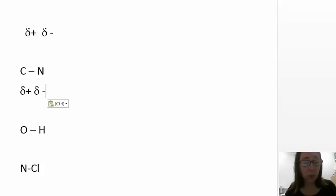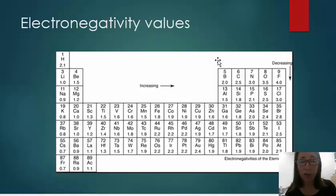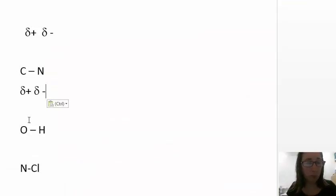Now, the difference between 2.5 and 3 is greater than 0.4, so this is a polar bond. And polar again means unequal sharing. Let's look at oxygen and hydrogen.